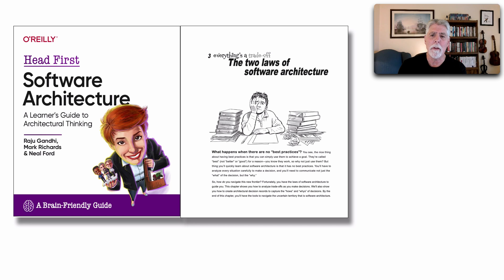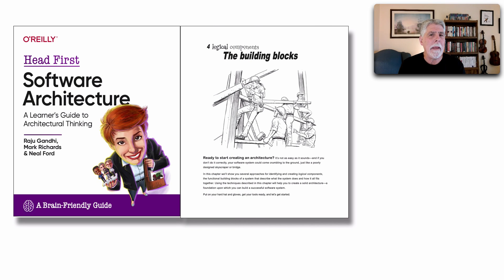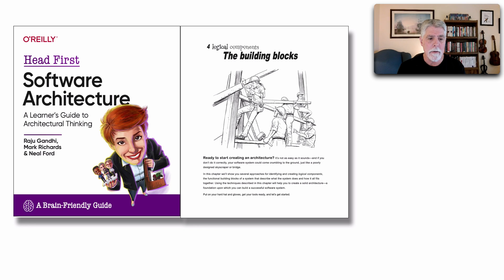Chapter three is really devoted to trade-offs and specifically our two laws of software architecture: everything in software architecture is a trade-off, and why is more important than how. We illustrate both of these laws throughout chapter three. In chapter four, we start embarking on what it means to build a software architecture — those logical components, the building blocks of an architecture — and you can investigate what it means to build a logical architecture and how it's reflected in your source code.